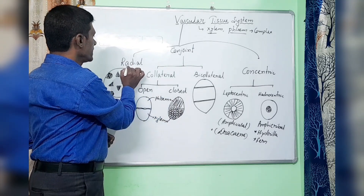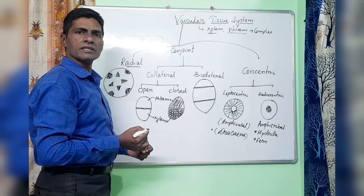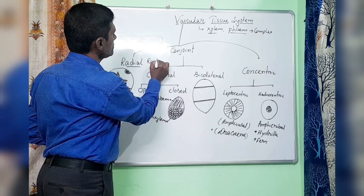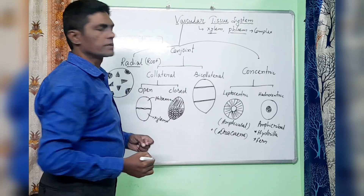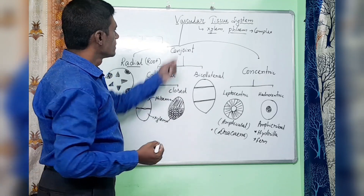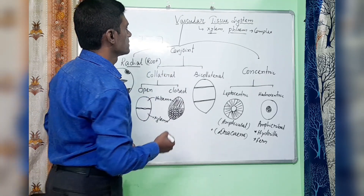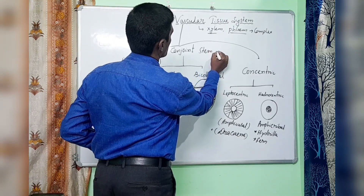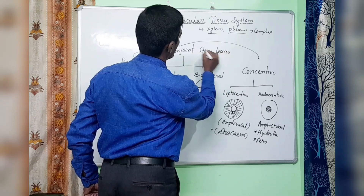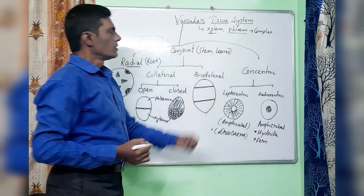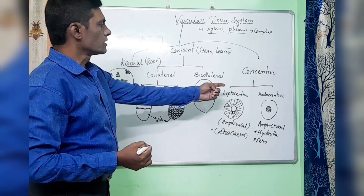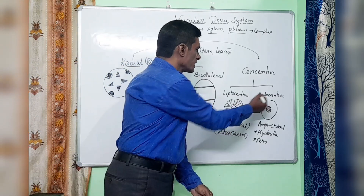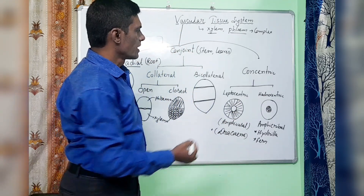The vascular tissue system is mainly divided into three groups. Radial vascular bundles are found in roots — both dicot and monocot roots. Conjoint type of vascular bundles are found in stem and leaves. Concentric is a totally different type of vascular bundle; they are again segregated into two groups: leptocentric and hydrocentric.